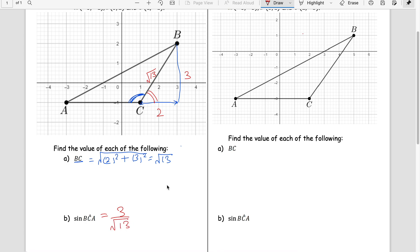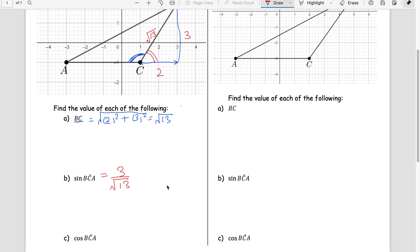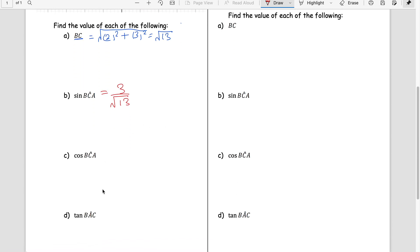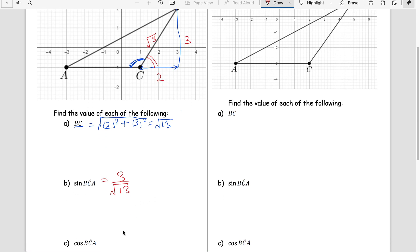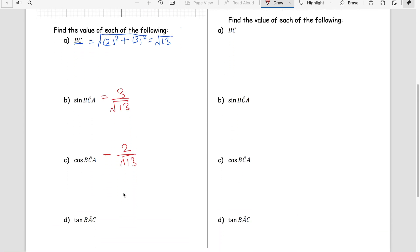Now cos BCA. BCA again this is obtuse, but we cannot answer this, so we jump to right-hand side where my cursor is showing you the acute angle. So cos is basically base over hypotenuse, which makes it 2 by under root 13, but we will put a negative sign here because obtuse angle is negative in terms of cos.